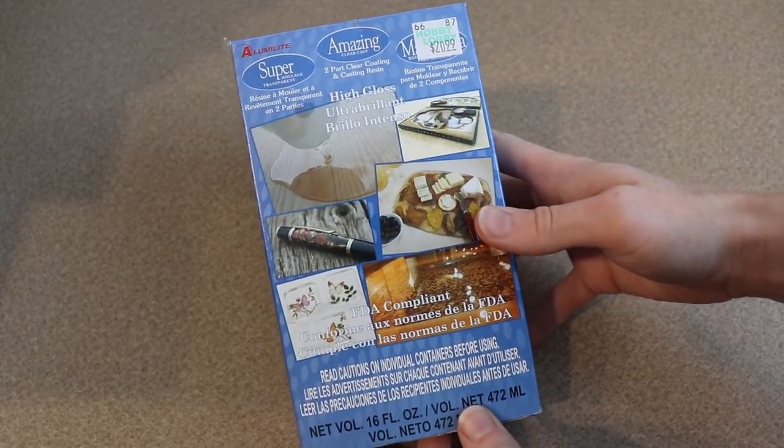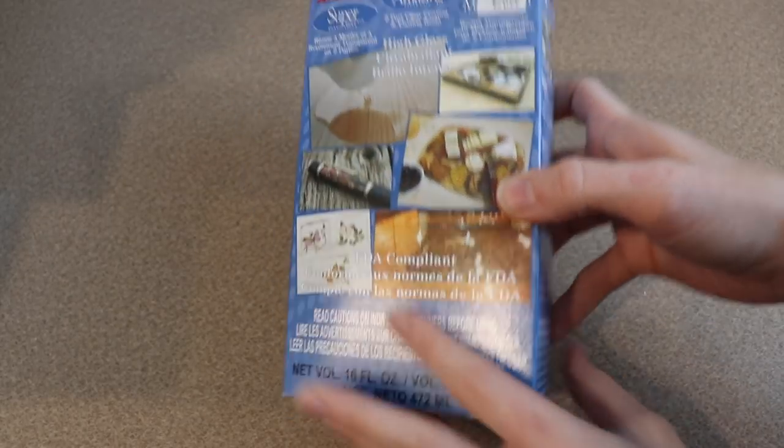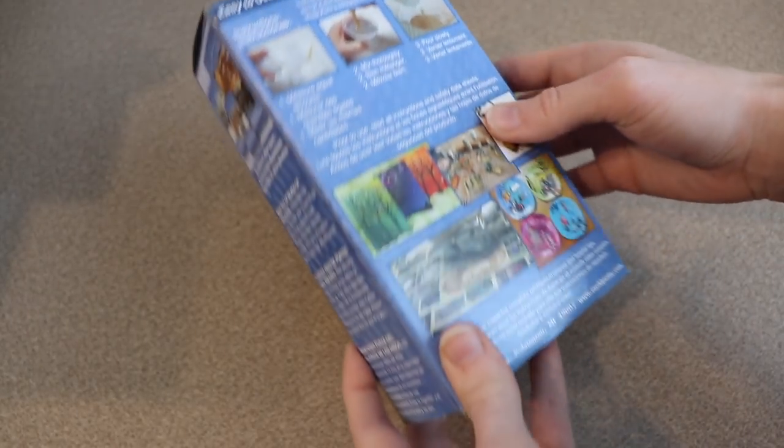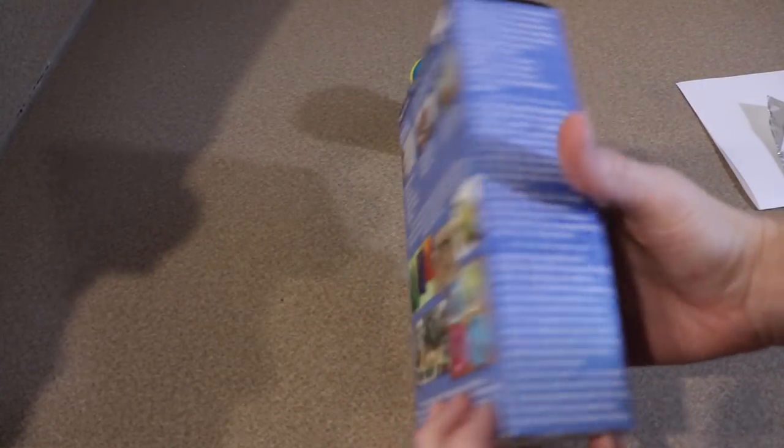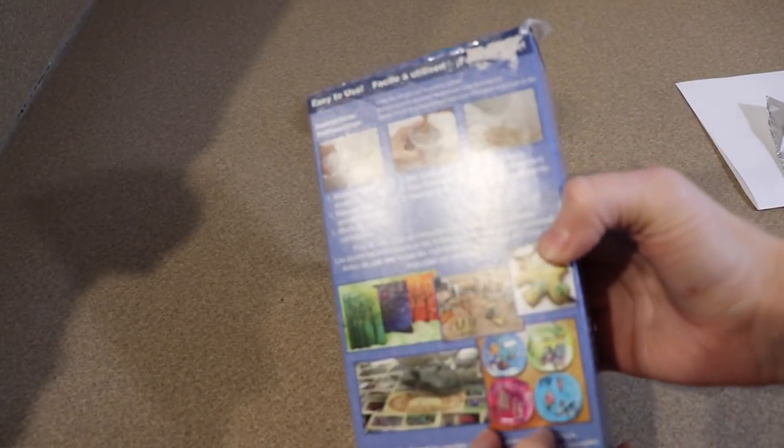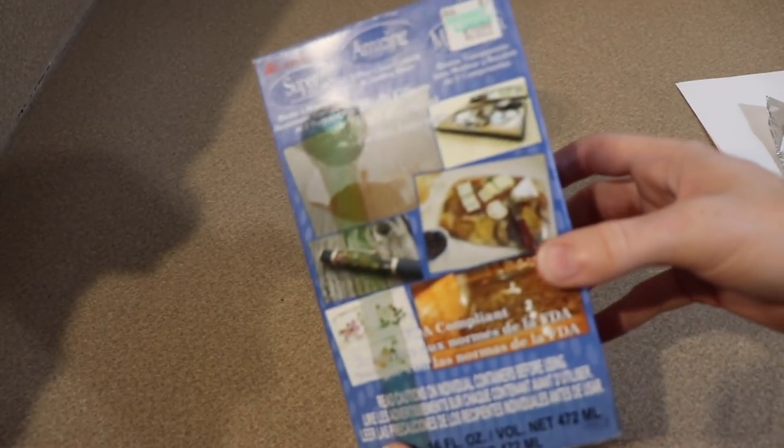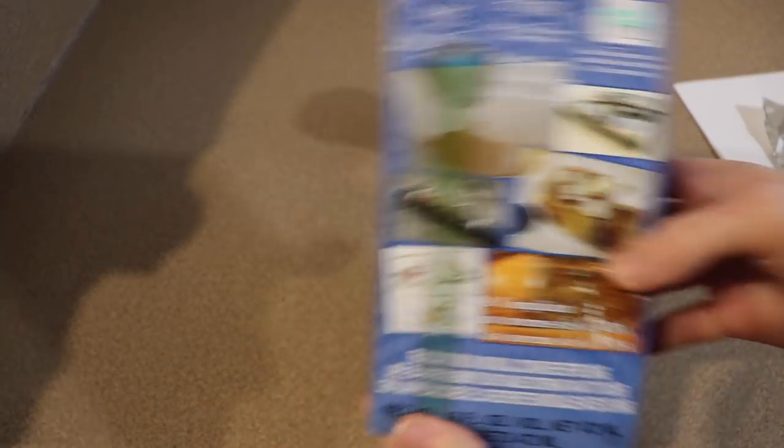Say that five times fast! I got this at my local art store. It's really simple to use. It comes with two different bottles, and you'll take equal parts from each bottle and mix those together to make your resin. If you buy resin, make sure to follow the instructions because it may not work the same way as this resin.